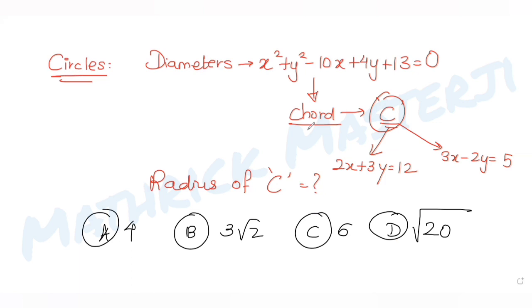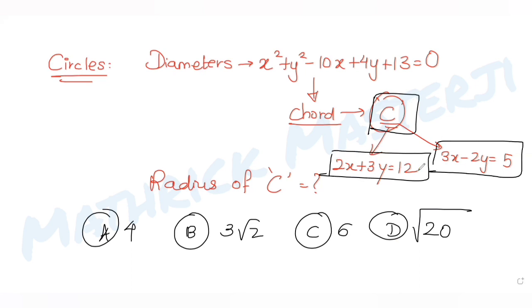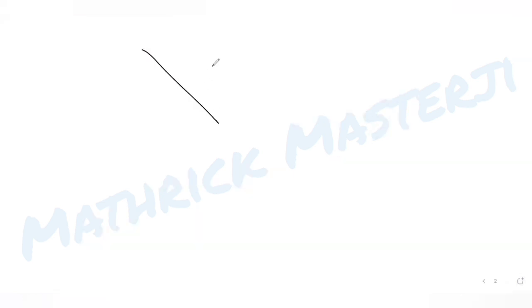To solve this, the first thing I can do is find the center of circle C by solving the two linear equations simultaneously, since the center is the point of intersection of those two lines. So let me set up: equation one is 2x + 3y = 12, and equation two is 3x - 2y = 5.